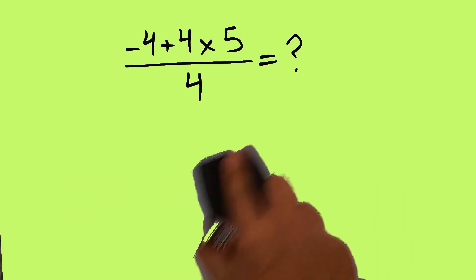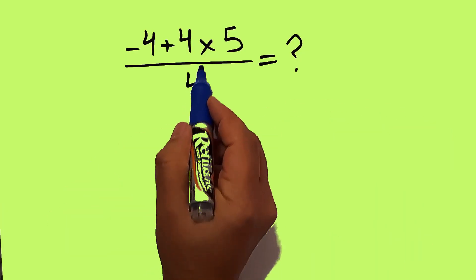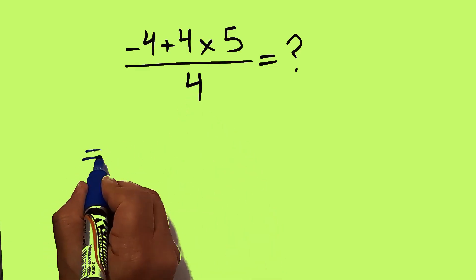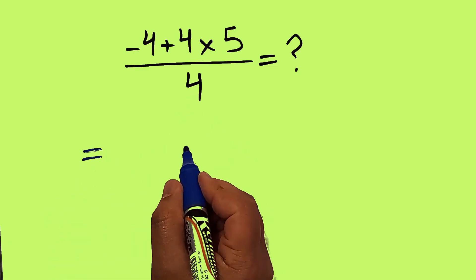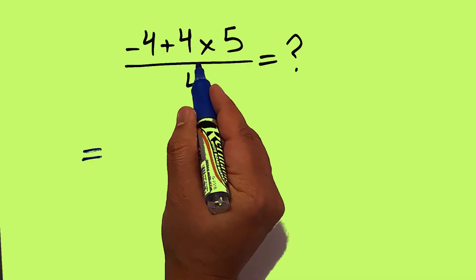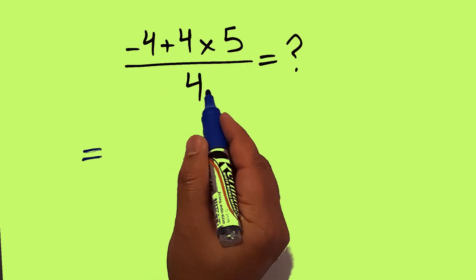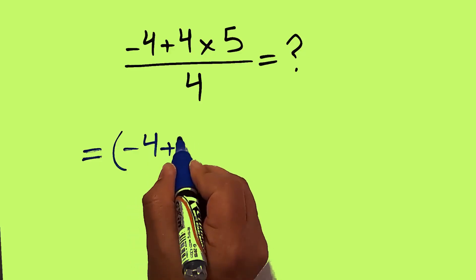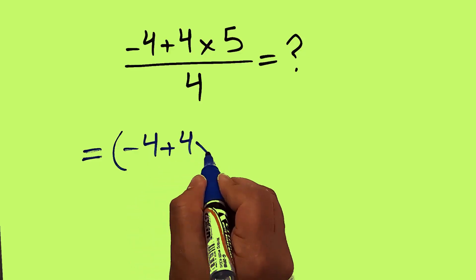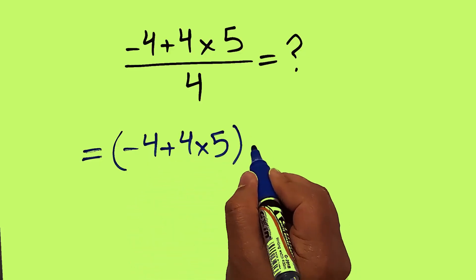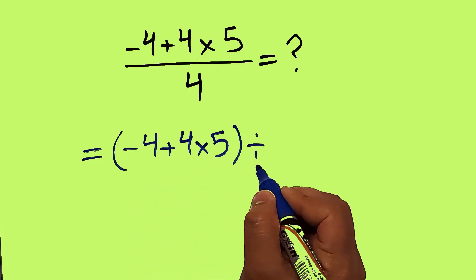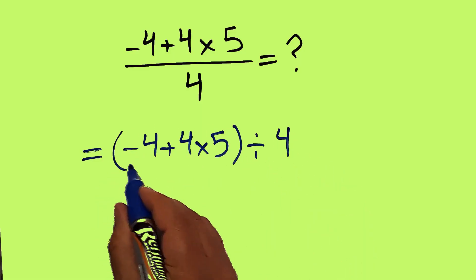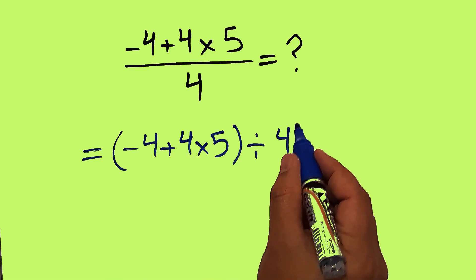Note the correct path. Our fraction can be written as the numerator divided by the denominator: parentheses, negative 4 plus 4 times 5, divided by just 4. The numerator divided by the denominator.